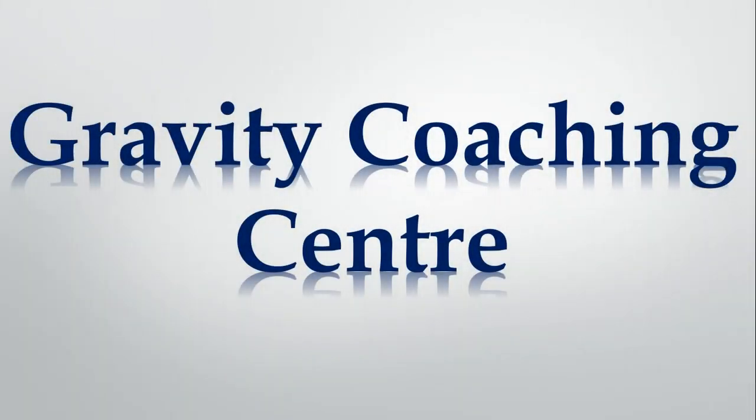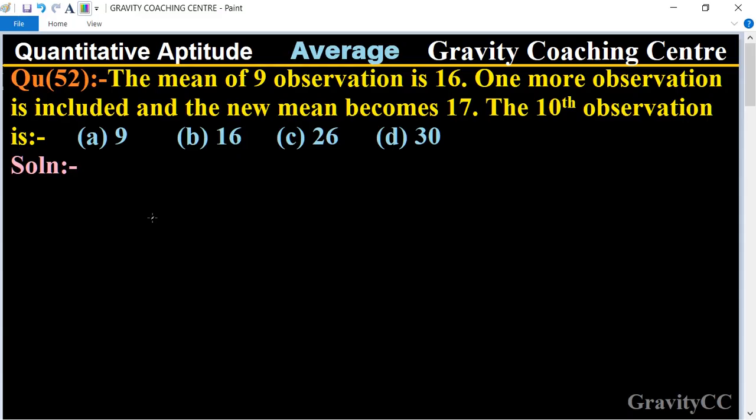Welcome to our channel Gravity Coaching Center, quantitative aptitude chapter average, question number 52. The mean of nine observations is 16, and one more observation is included and the new mean becomes 17. So the 10th observation is what?